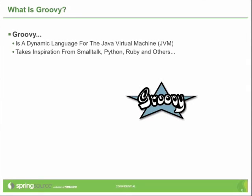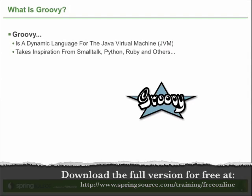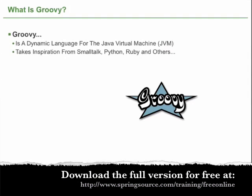Groovy is a dynamic language for the Java Virtual Machine, and the JVM part is important. From the very beginning, Groovy was designed to run on the JVM. It's not the case that Groovy was developed and then later ported to the JVM. From the beginning, Groovy was designed to target the JVM.